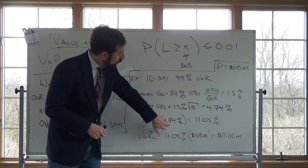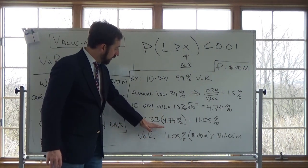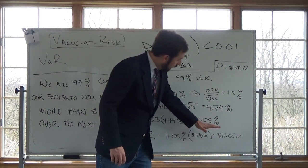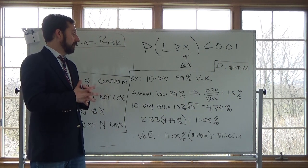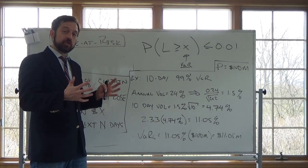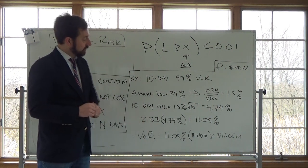So I can take my 4.74% 10-day standard deviation, multiply it by 2.33, and that gives me 11.05%. The idea here is over a 10-day period, I'm 99% certain I won't lose more than 11%. That's what this calculation is saying here.